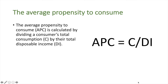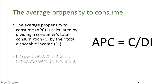The average propensity to consume is calculated by dividing a consumer's total consumption by their total disposable income. If I spent $90,000 out of my $100,000 salary, my APC is 0.9.